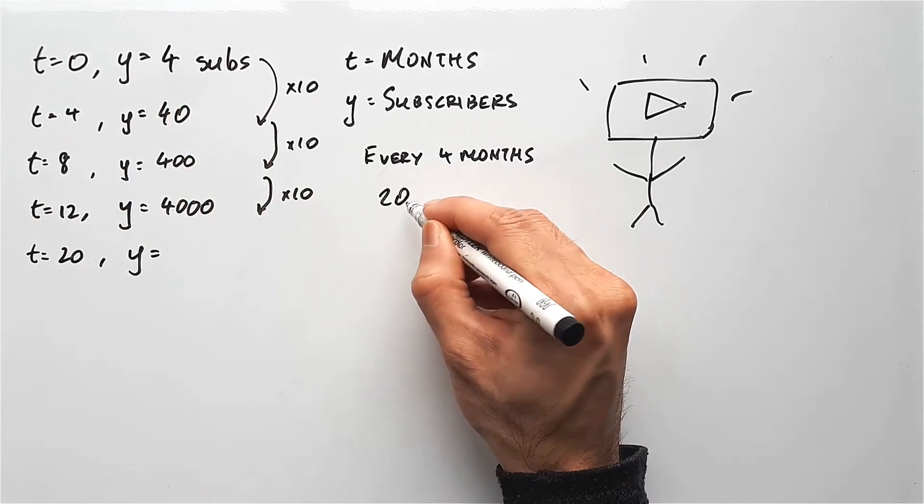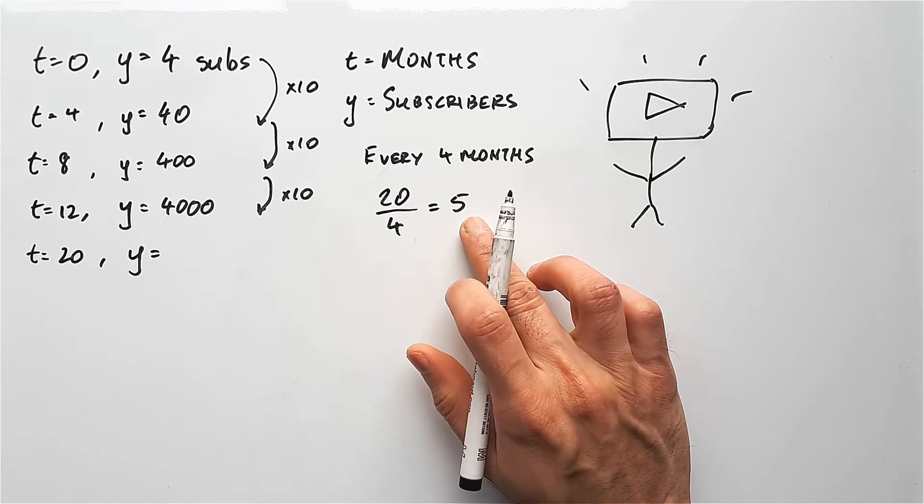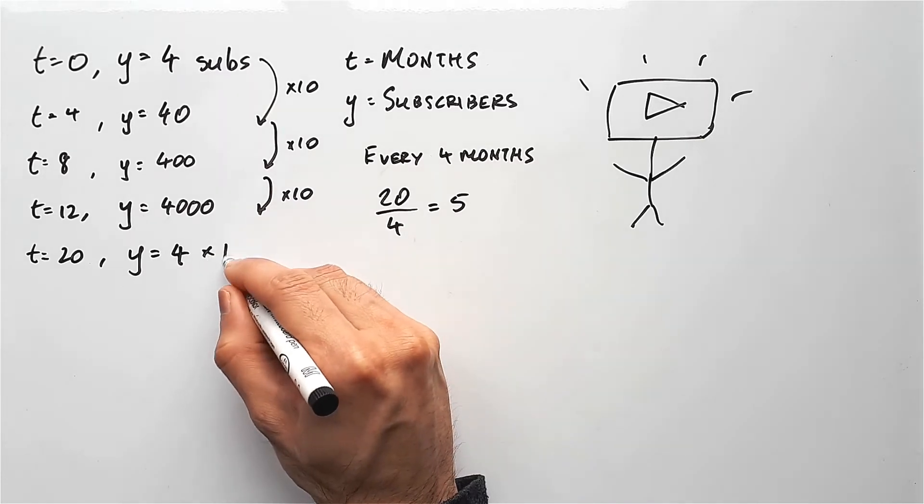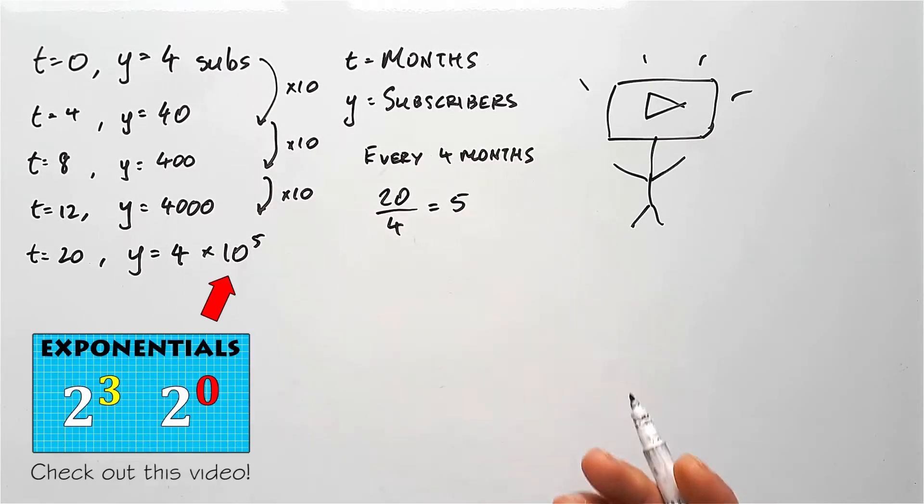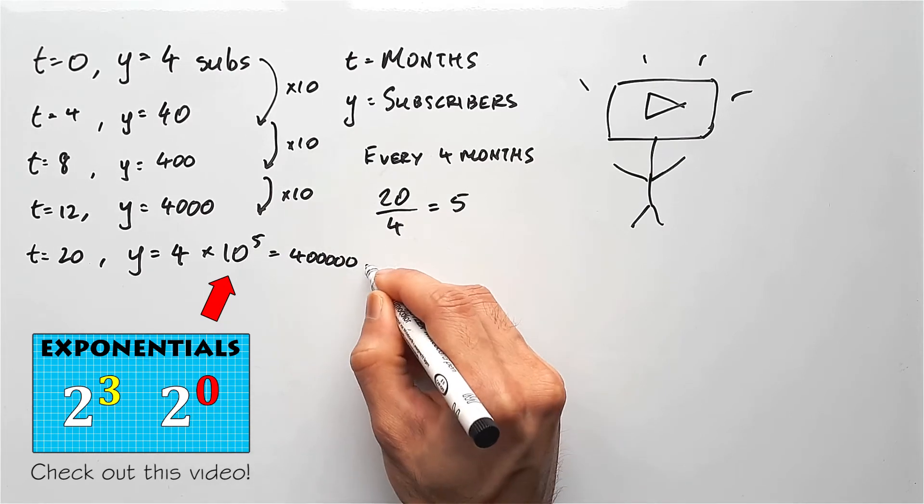So you could just take 20, divide by 4, and we can see that it has done this five times. So we could say that starting out with four subscribers, you just need to multiply 10 by five times, or 10 to the power of 5, which gives us 400,000 subscribers.